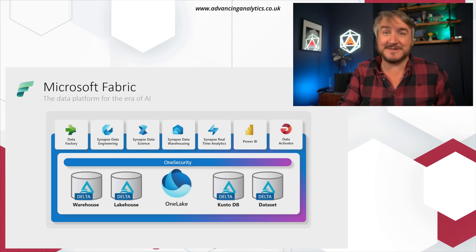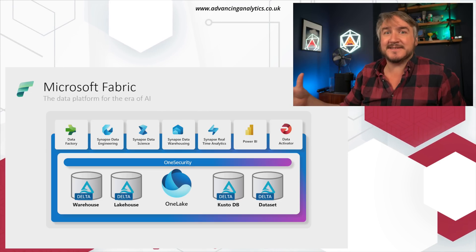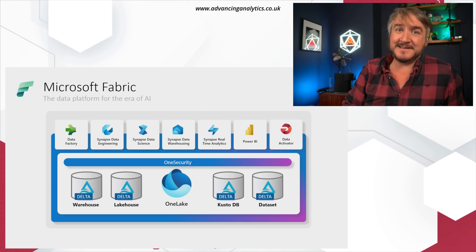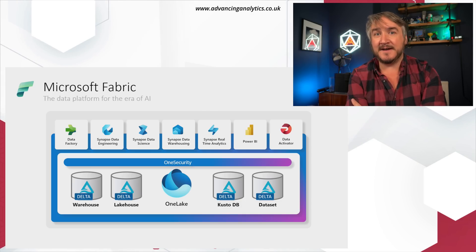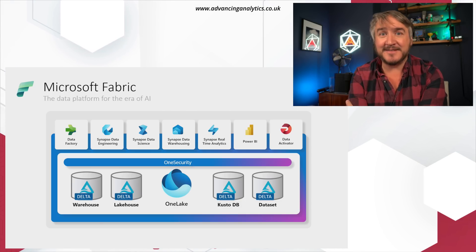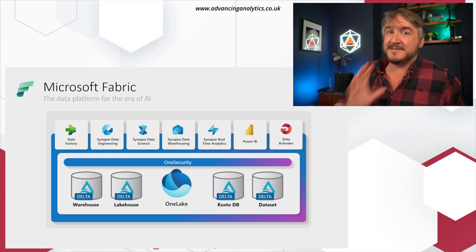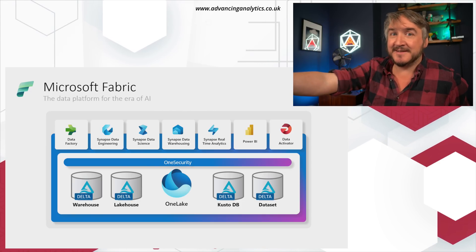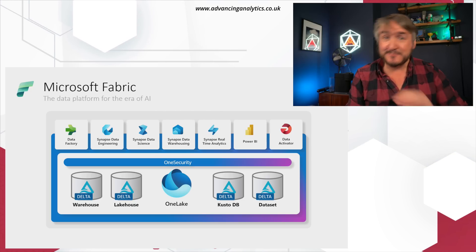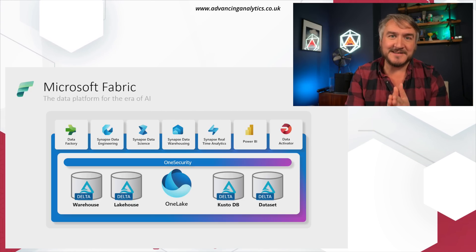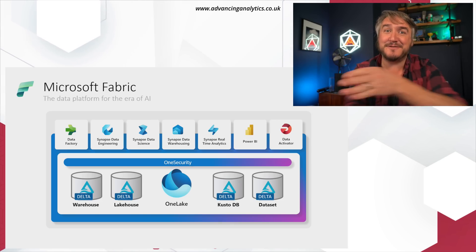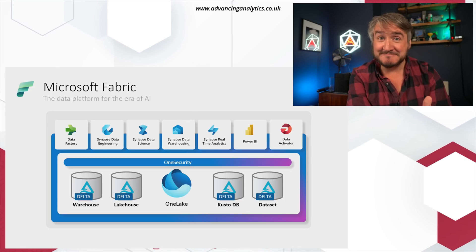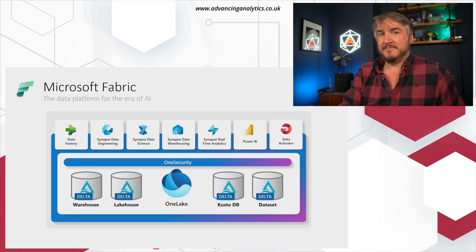That is a fantastic story. You've got lots of different routes to get at your data, loads of different options for how people can query it, but the data is held in a single consistent standard format. You can land data via the warehouse and read it via Spark. You can land data via Spark and read it via the warehouse. You can read all of these Delta tables directly in Power BI without needing to lift and shift into a model — you don't need to import it, you can just read the Delta directly. That is huge. There's just a single copy of your data stored in a consistent, coherent format, and any of the compute engines can read it.